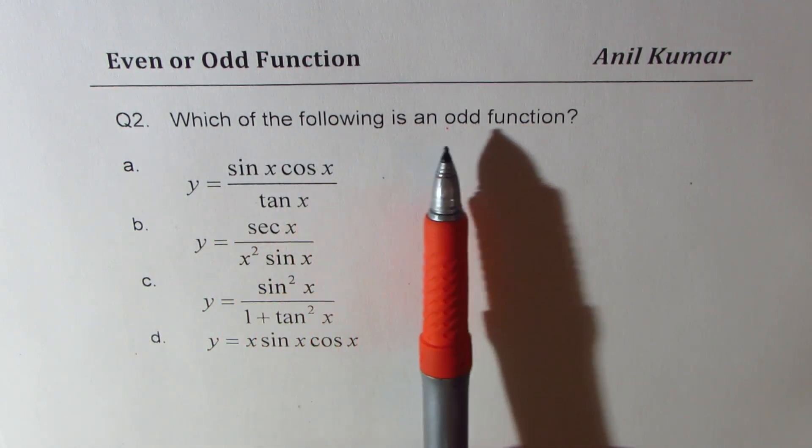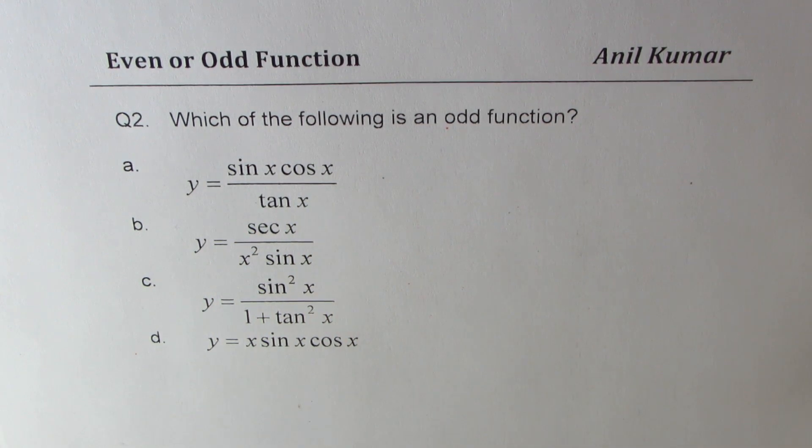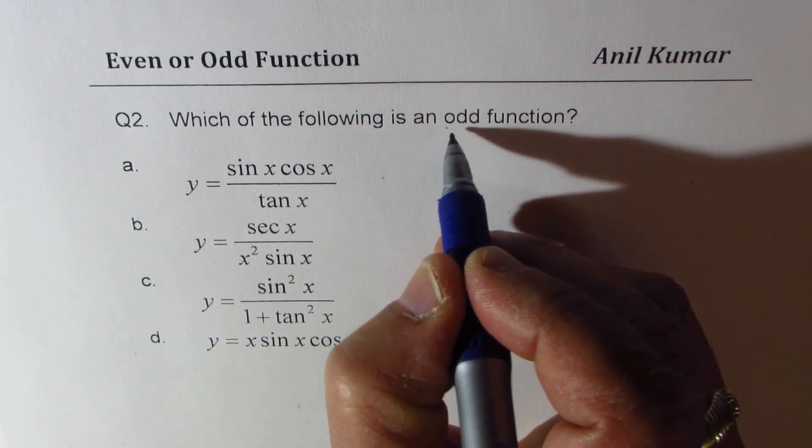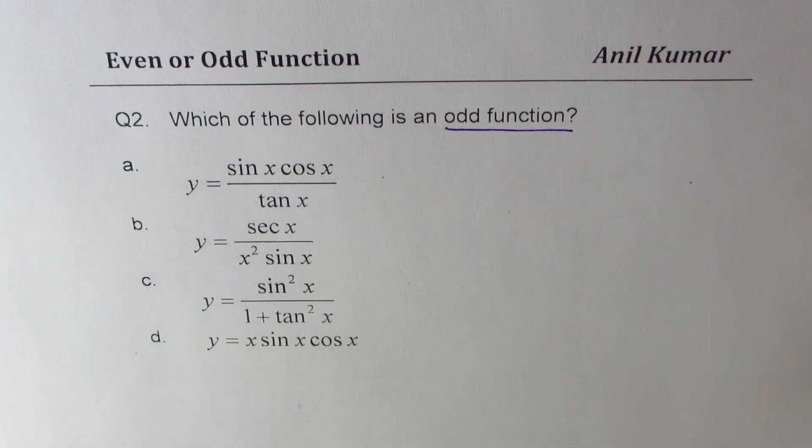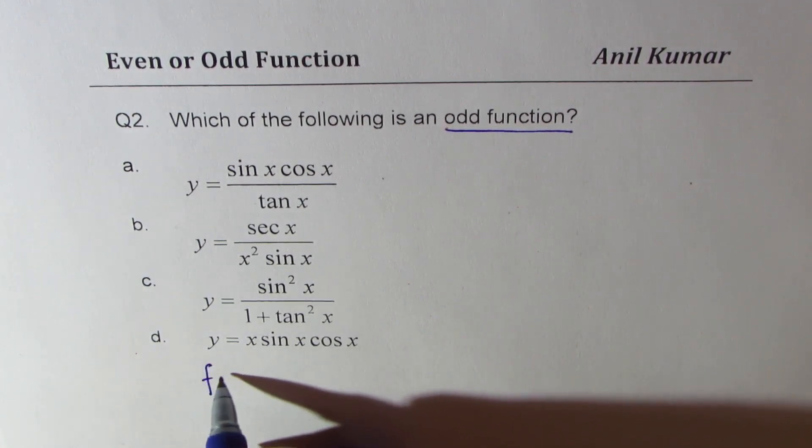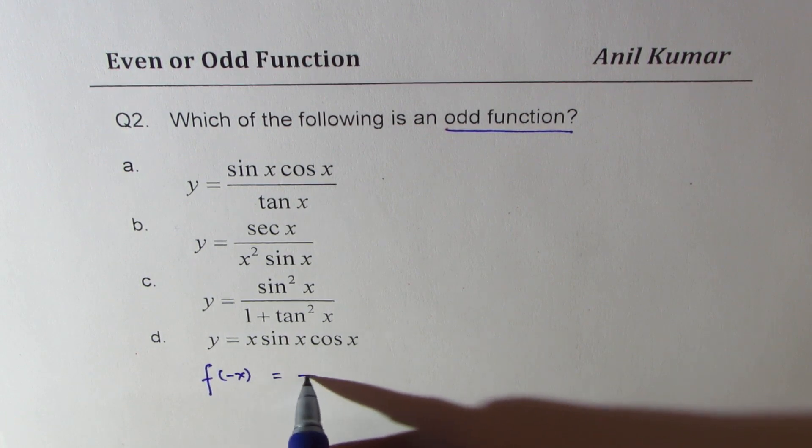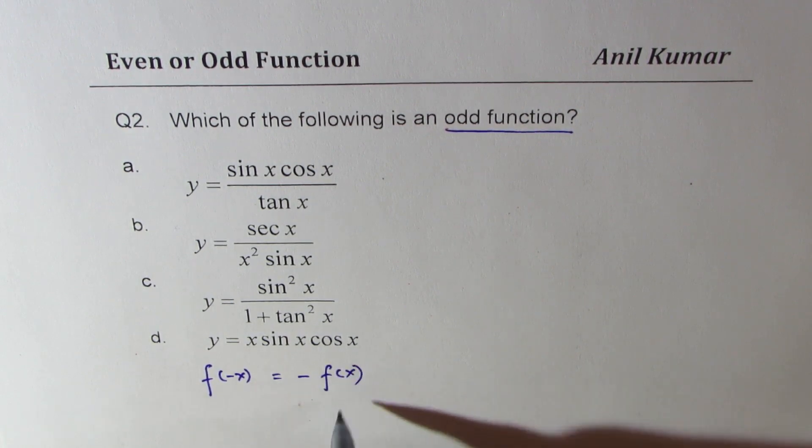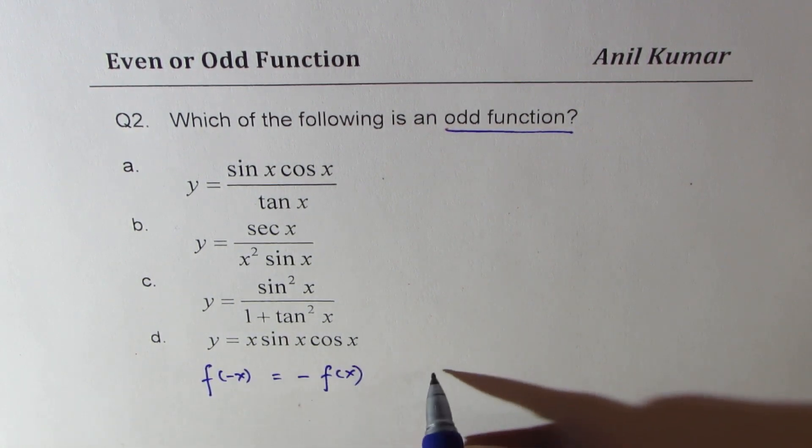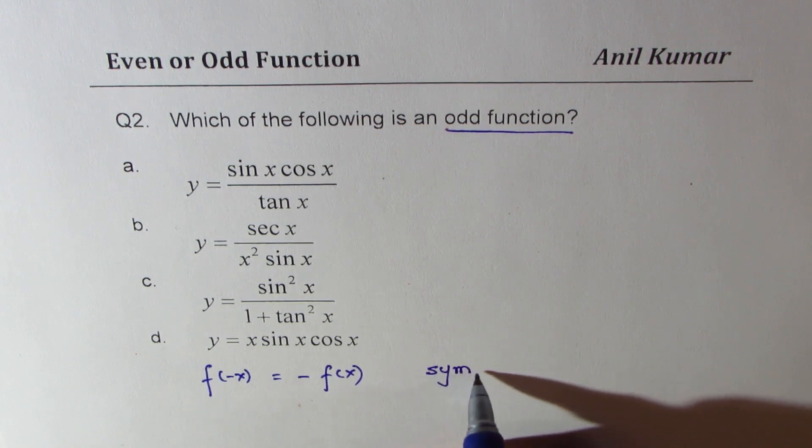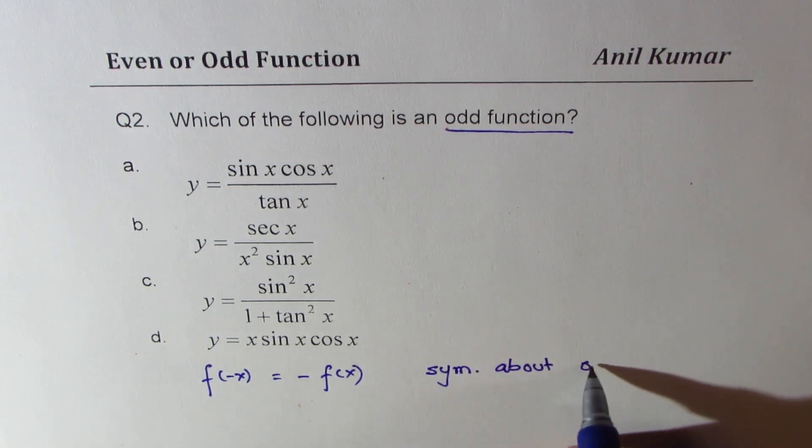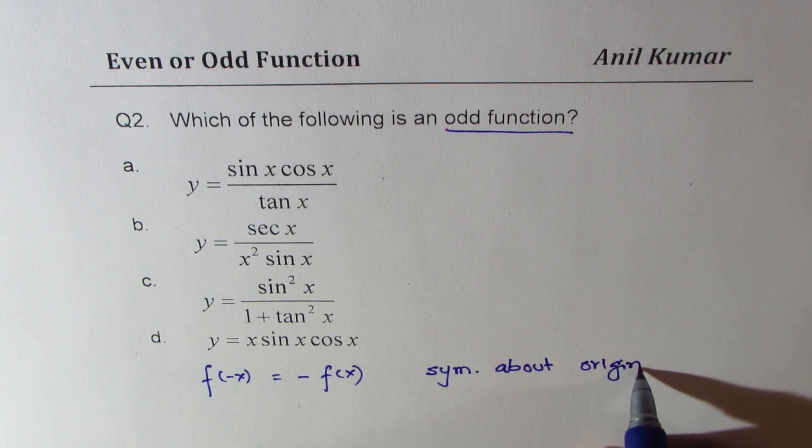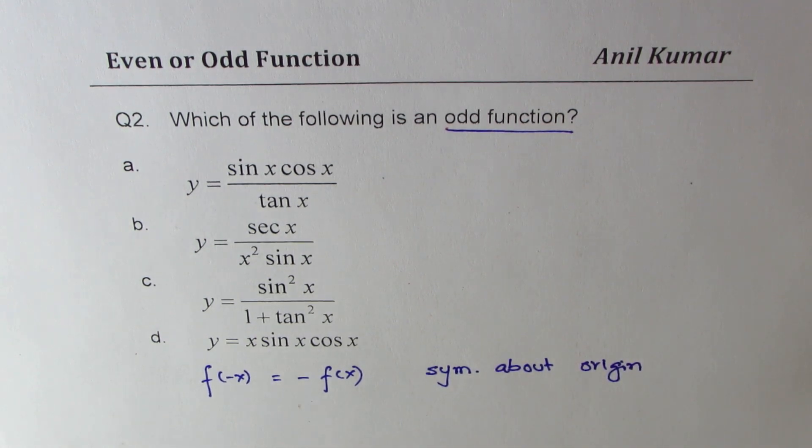Which of the following is an odd function? Now we are looking for odd function, not even. So apply the strategy. Odd means f of minus x should be equal to minus of f of x, and this type of function is symmetric about origin. I hope you must have got the solution by now.